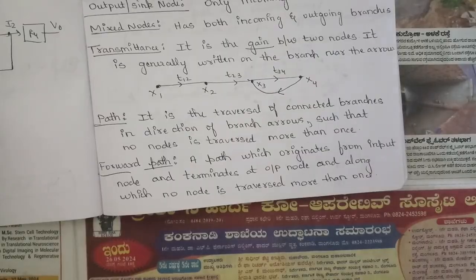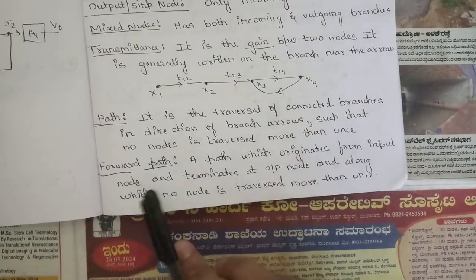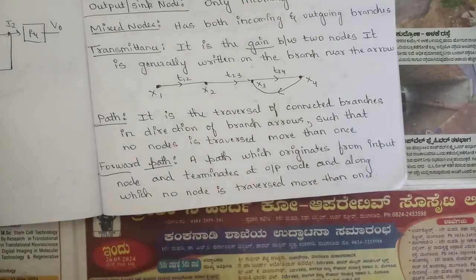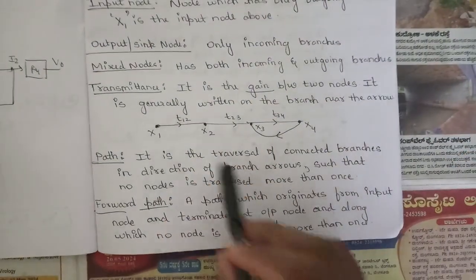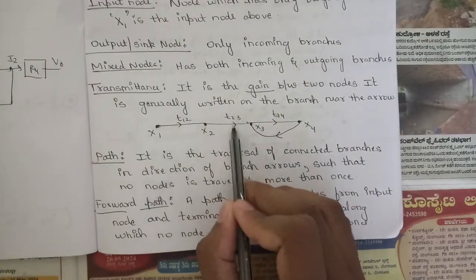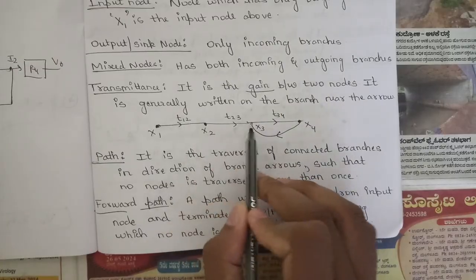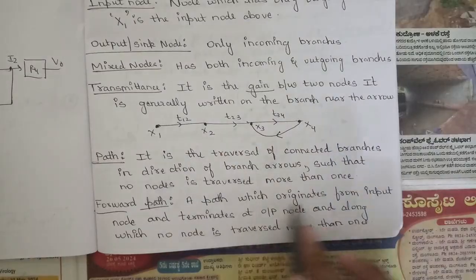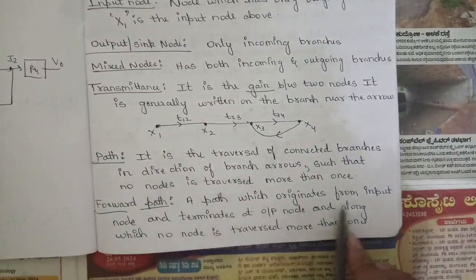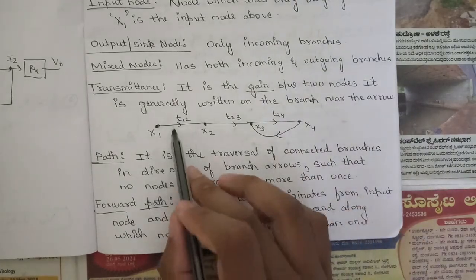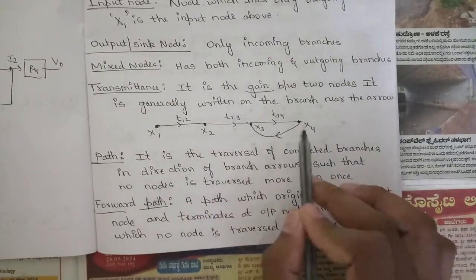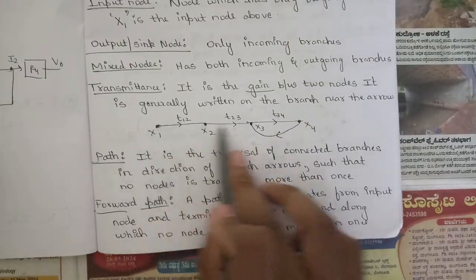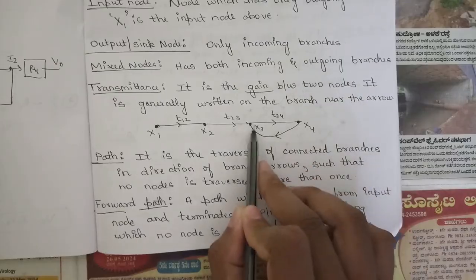The next concept is forward path — a path which originates from the input node and terminates at the output node, along which no node is traversed more than once. In the figure, you can see the forward path follows the direction of all transmittances in the same direction. For example, nodes 1, 2, 3 form a forward path. You cannot extend beyond that since a node already traversed cannot be revisited.